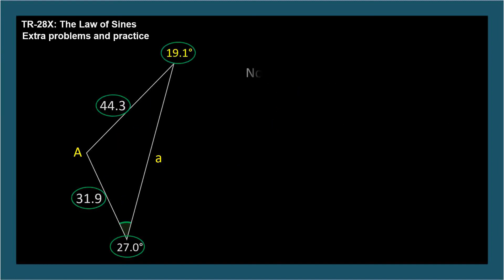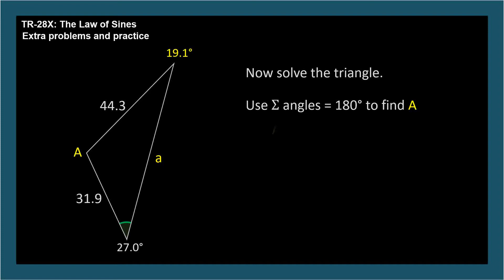There's only two variables left, so solve the triangle. We know two angles, so we can find Angle A since it equals 180 degrees minus 27.0 degrees minus 19.1 degrees, so 133.9 degrees. One variable left.